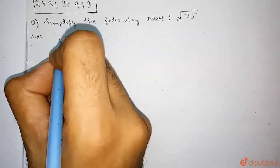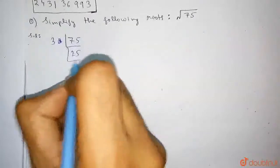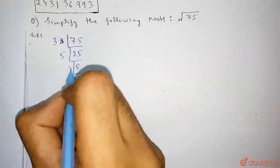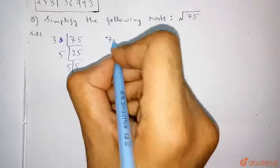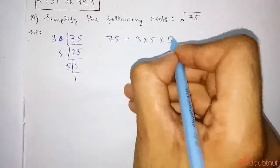So, 75: 3 goes into 25. Now, 5 goes into 5, leaving 1. So, 75 we can write it as 3 into 5 into 5.